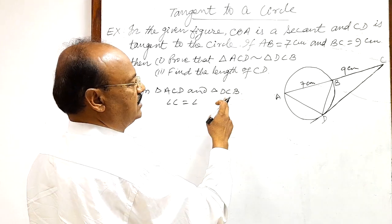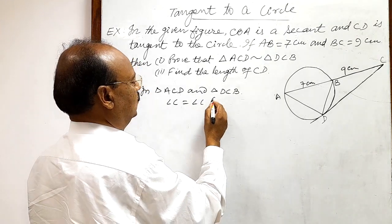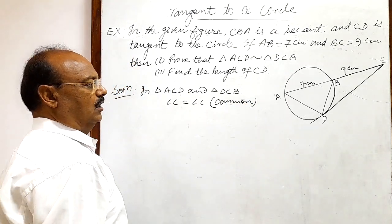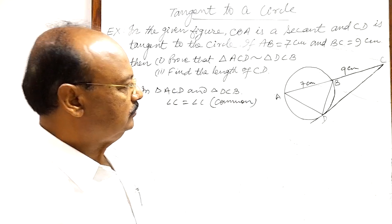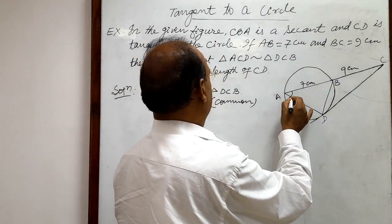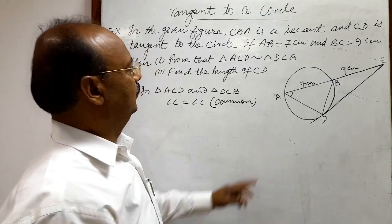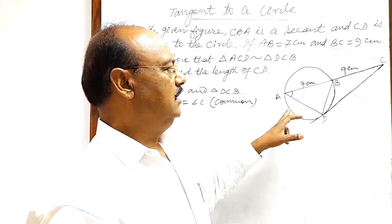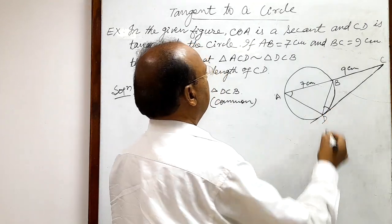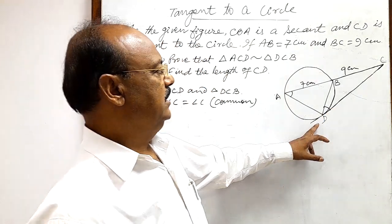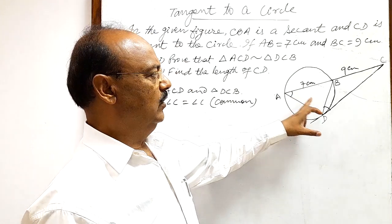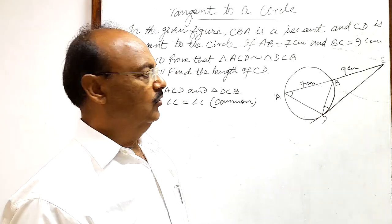In both the triangles this is common angle. Secondly, this angle A in triangle ACD will be equal to this angle D in triangle DCB. Angle A is equal to angle D. What is the reason?